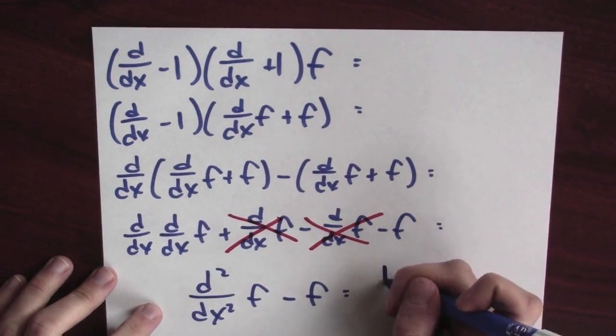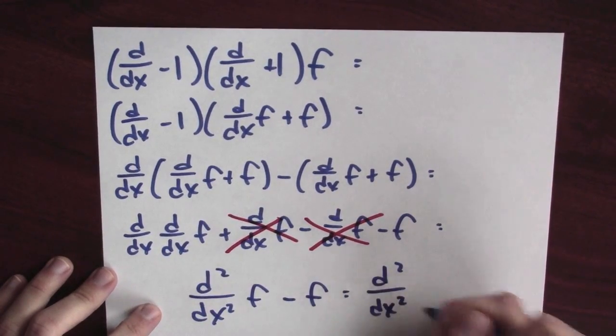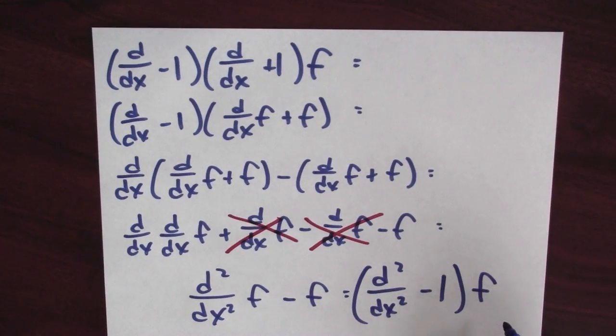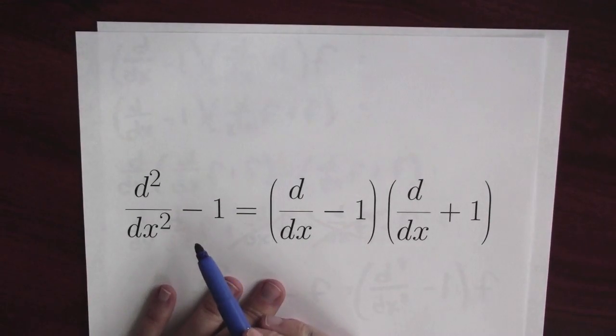Well, I could also write this as the second derivative minus 1 applied to f. And that's exactly what's on the other side of this equation.